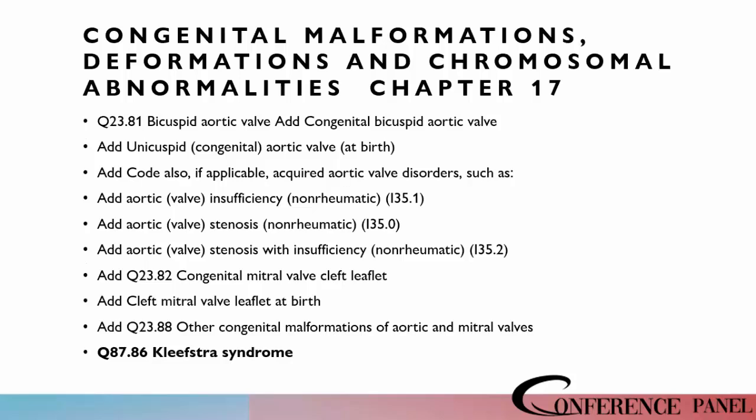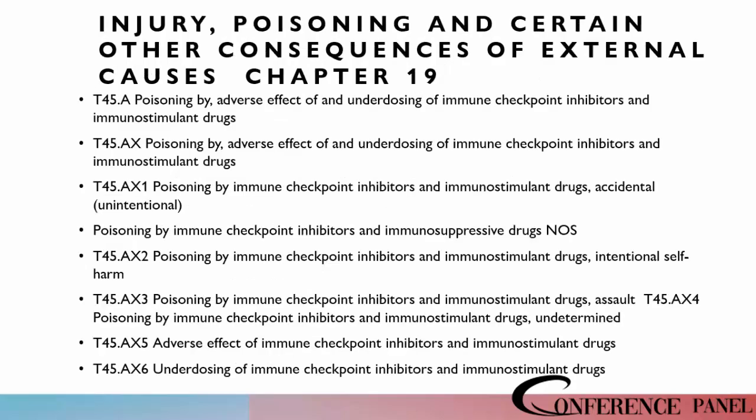Chapters fourteen, fifteen, and sixteen had no real particular changes, but in chapter seventeen for congenital malformations, deformations, and chromosomal abnormalities, we've got new codes here. These codes will start with Q. We also have a number of new codes related to external causes in chapter nineteen. These codes will start with T and are related to poisoning, adverse effect, or underdosing.